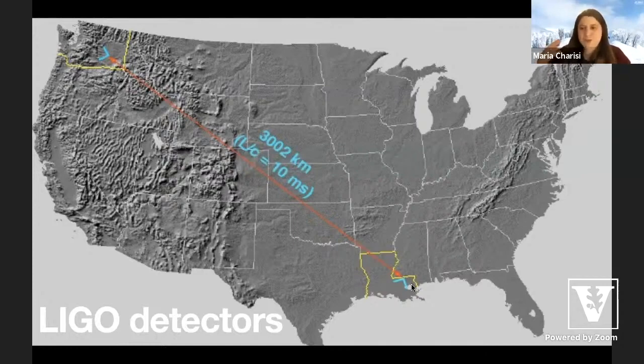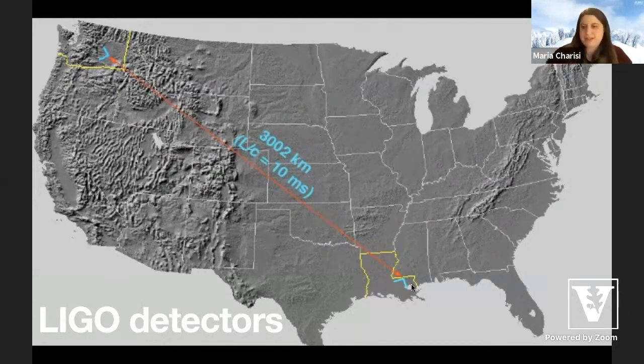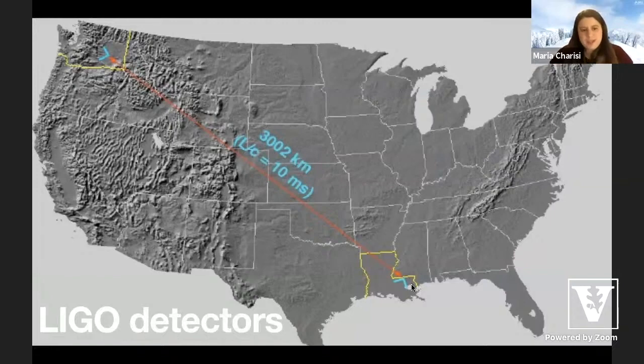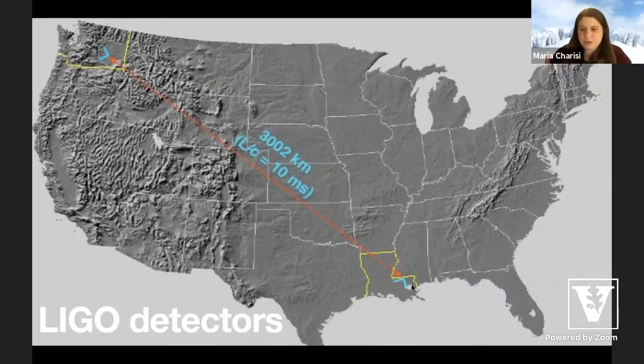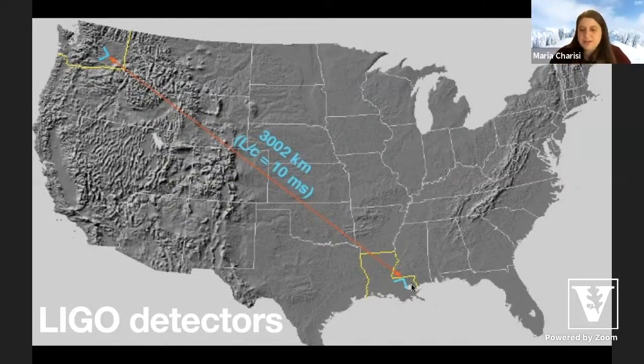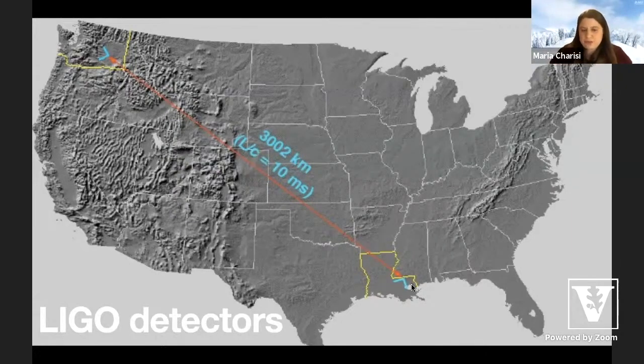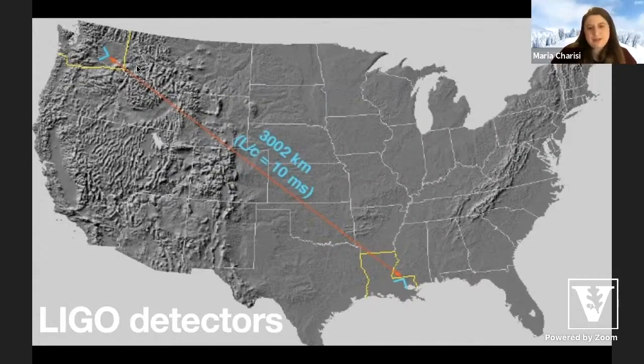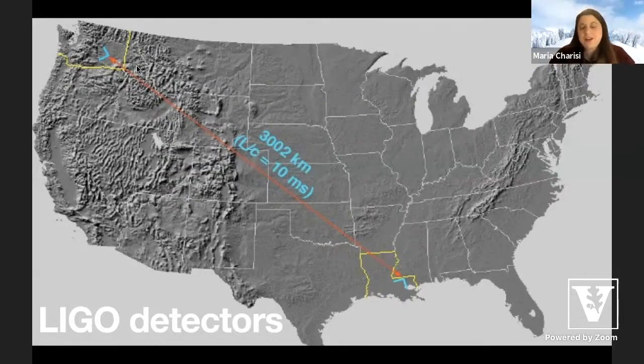So the reason they wanted two detectors, there are actually two reasons. One is pretty much the same reason we have two ears. So we have two ears so we can get a sense of where the sound is coming. The second reason is they were trying to build such a sensitive detector that pretty much everything could disrupt it. Like an earthquake at one of the sites, or an airplane passing by, a thunderstorm, anything could disrupt this detector. And we didn't want to find spurious signals. But if we had something detected here, and also something detected 3000 kilometers away, the exact same thing, then we could be more confident that we are detecting gravitational waves.